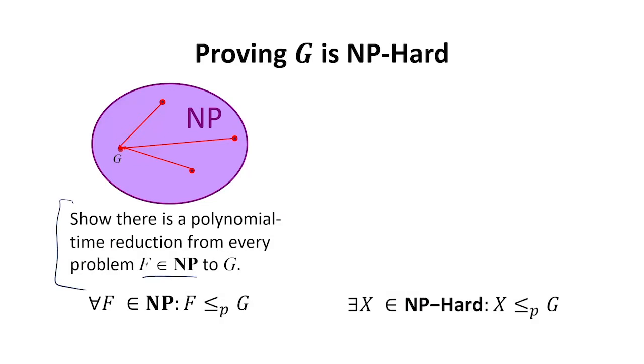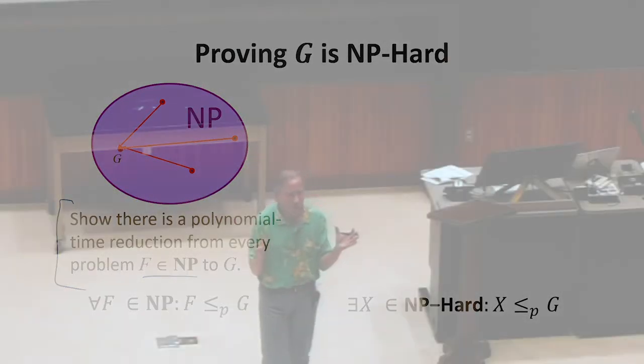So we could try to prove that, which is what we did for one problem, the NANSAT problem. We proved that there's some way because of the definition of NP and what a verifier is and that it runs in polynomial time that every problem reduces to it.